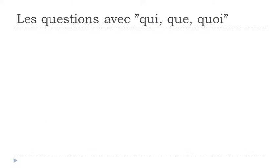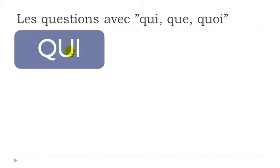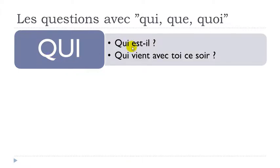Let's discover QUI. QUI means WHO. So if you want to ask a question regarding someone, like in this example: who is he? — QUI EST-IL. Remember the formal way: you change the order and put the subject IL after the verb. QUI EST-IL, who is he? Make the liaison: QUI EST-IL.